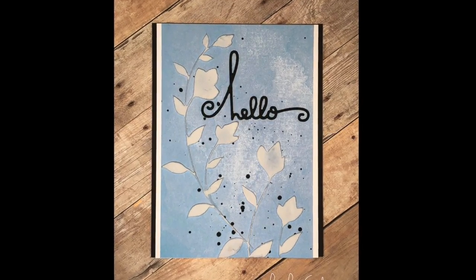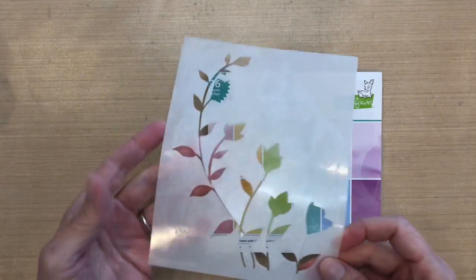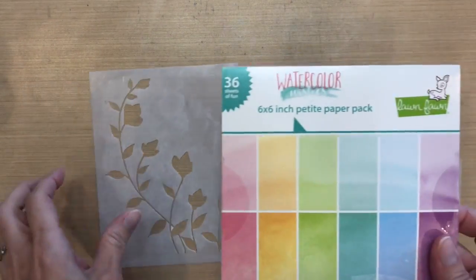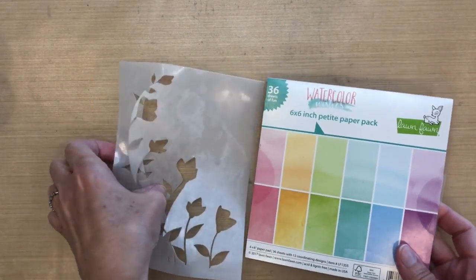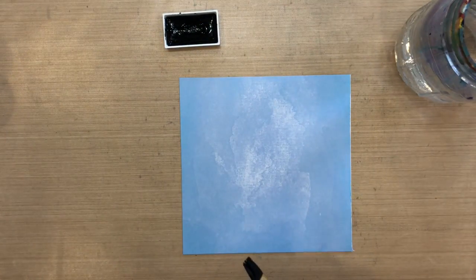Hi everyone, it's Darlene. Welcome back for another card video. This is a quick and simple card you can make easily. I'm using this stencil by Penny Black called Promenade. I also have this Lawn Fawn 6x6 paper pack called Watercolor Wishes. I'm using the dark blue paper from this pack.